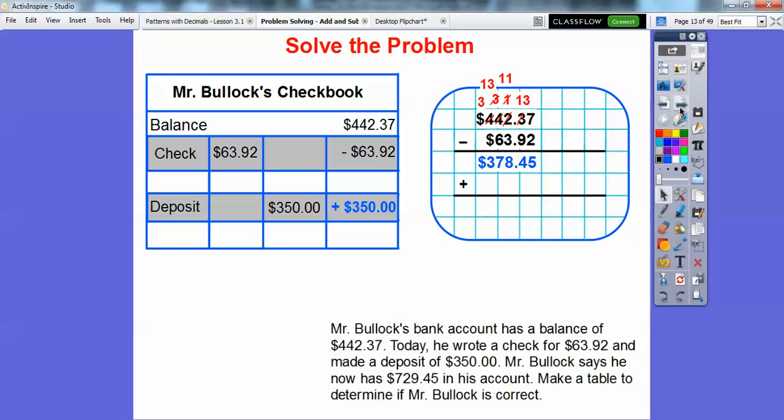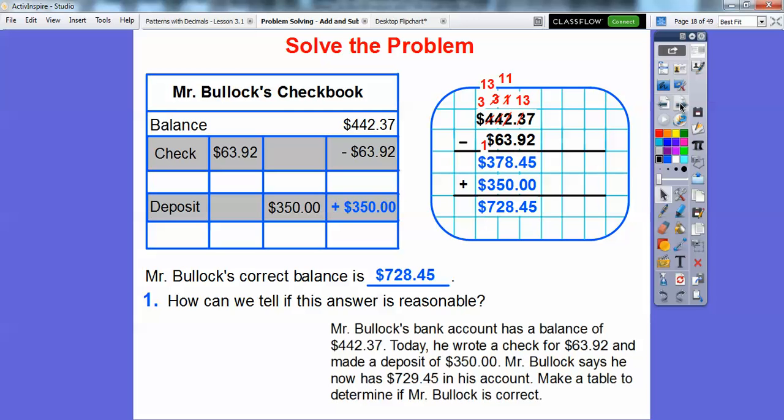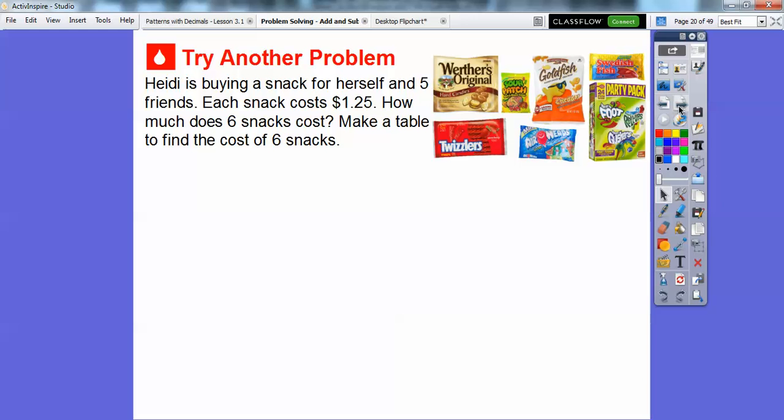Now we're going to go ahead and add this deposit in right here. And then as long as we did our arithmetic right, we get Mr. Bullock's balance is $728.45. So Mr. Bullock's correct balance is $728.45. How can we tell if this answer is reasonable? It was really close to what Mr. Bullock had, $729.45. He was just off a dollar right there. So it's important to keep your checkbook nice and balanced so you don't, they call it overdraft. You don't write checks for more money that you have in your account because the bank will charge you a lot of money for writing overdraft checks.